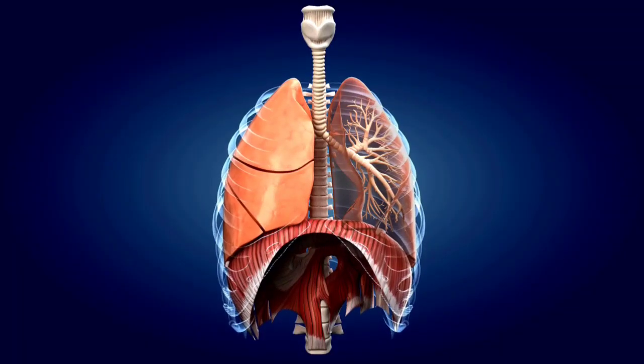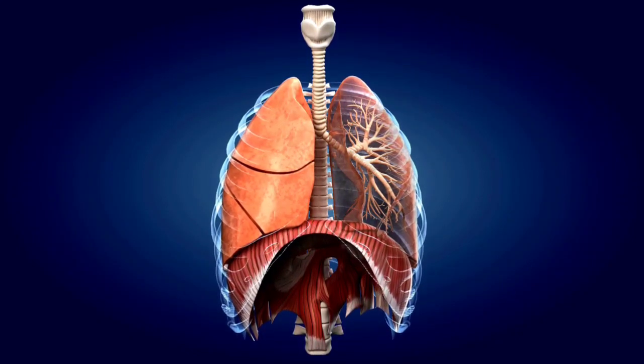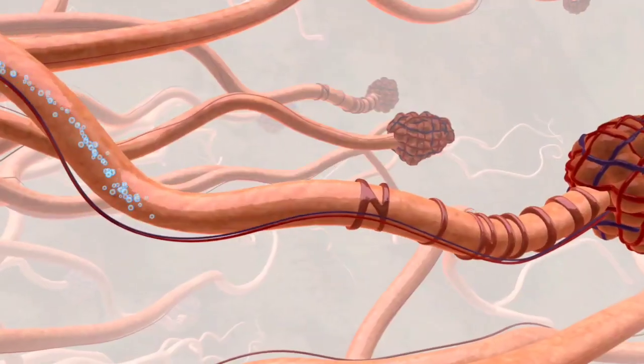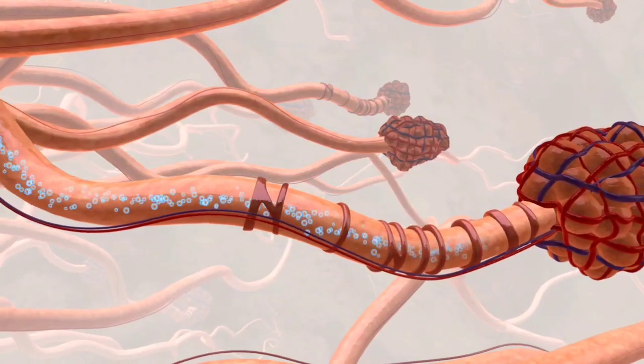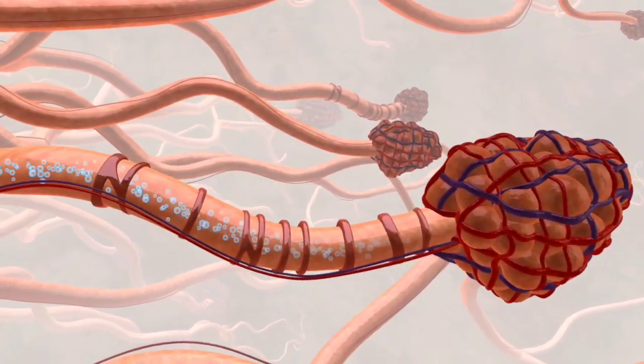Next, we have our respiratory system, responsible for the exchange of oxygen and carbon dioxide. This includes the nose, the throat, the trachea, the bronchi, and the lungs. The primary function is to provide oxygen to the body's cells and to remove carbon dioxide as waste. It also regulates our acid-base balance and supports the production of sound for speech. Common disorders include flu, bronchitis, and pneumonia.